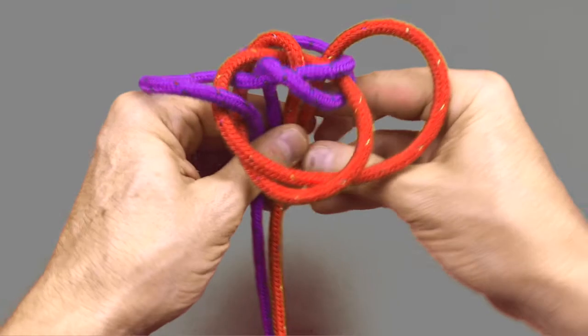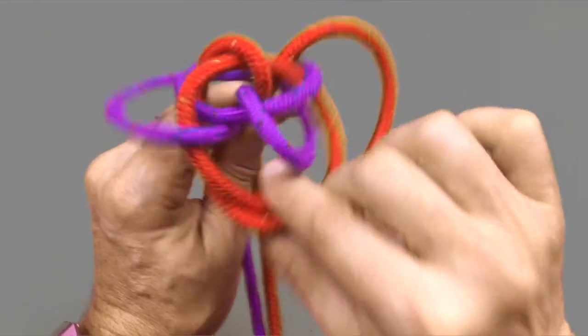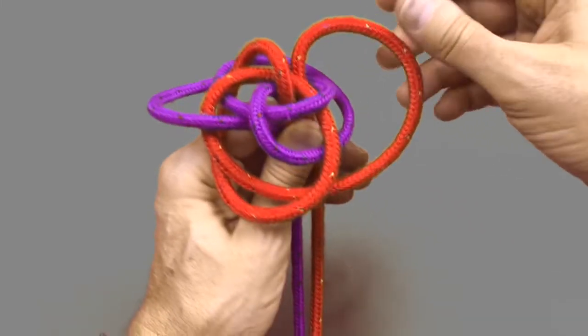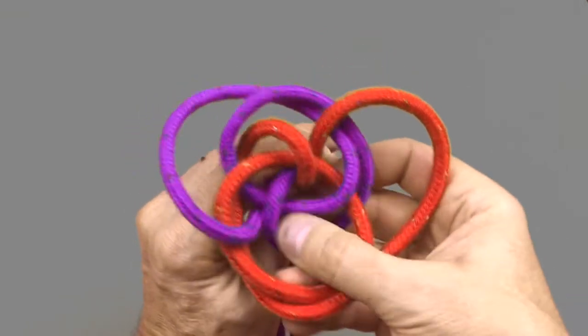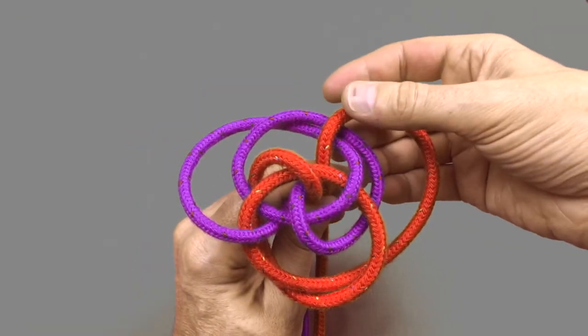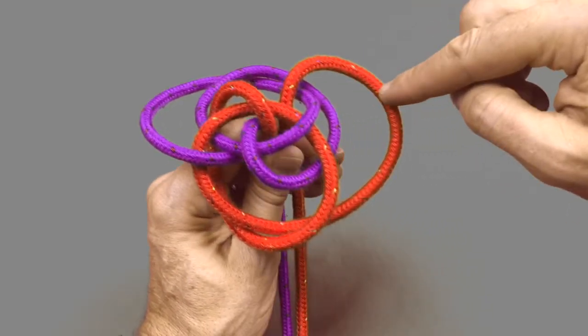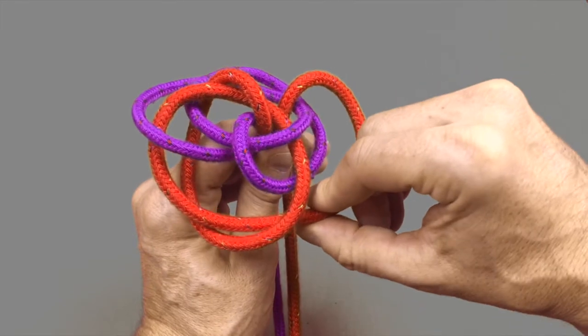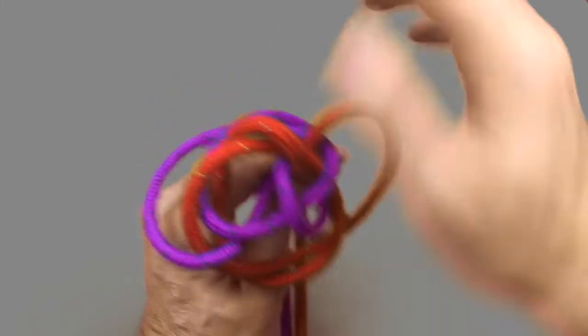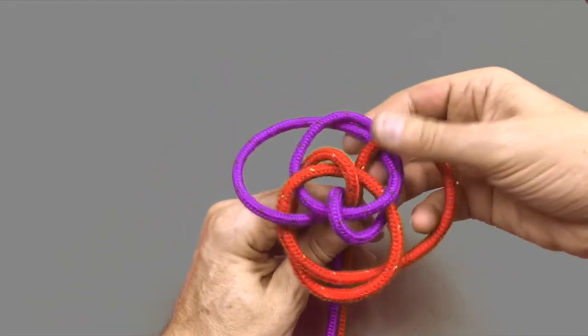This effectively completes the knot. Now we've got to go through the critical process of tightening it. At the start of the knot we said we were going to go in a clockwise direction. This is really important at this step because as you pull the lines tight, if you are holding on to the longer tail and then always pulling the lines in a clockwise direction and then teasing them all the way through the knot, you will end up getting the knot as tight as possible.